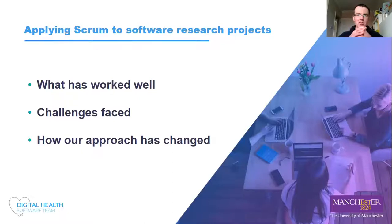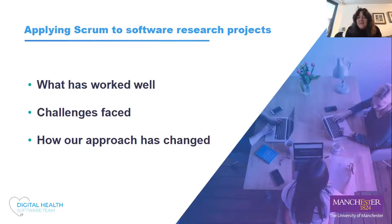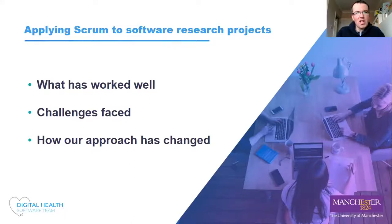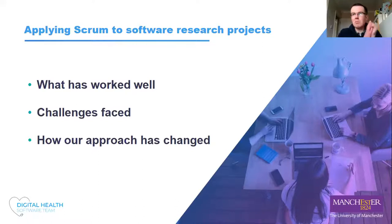A question from Manuel: what's the minimum number of people you need in a team to apply Scrum efficiently? The guidance is about three to seven for a Scrum team. If you've got less than three, there's a question of who fulfills all of those roles. Less than three probably isn't the most effective way forward, though I'll talk about the challenges when the team is smaller as we go on.